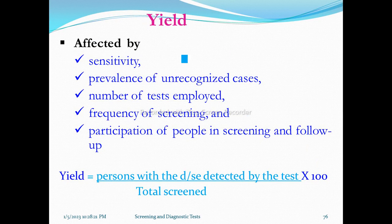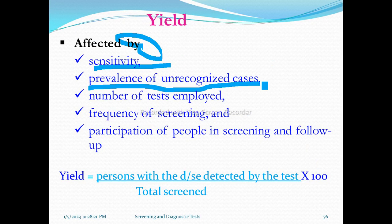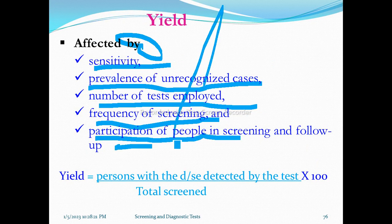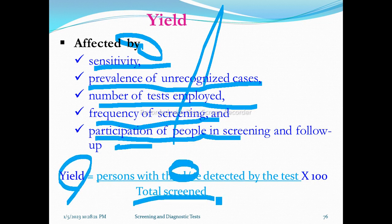Yield is affected by: sensitivity, prevalence of unrecognized cases, number of tests employed, frequency of the screening test, and the participation of people in screening and follow-up.